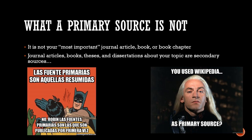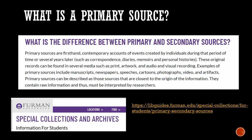So what then are primary sources? I like the following definition from Furman University: primary sources are first-hand contemporary accounts of events created by individuals during that period of time or several years later, such as correspondence, diaries, memoirs, and personal histories. These original records can be found in several media such as print, artwork, and audio and visual recording. Examples of primary sources include manuscripts, newspapers, speeches, cartoons, photographs, video, and artifacts. Primary sources are closest to the origin of the information — they contain raw information and must be interpreted by researchers.